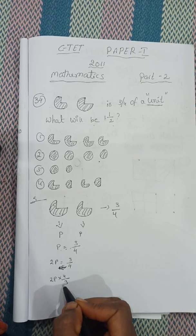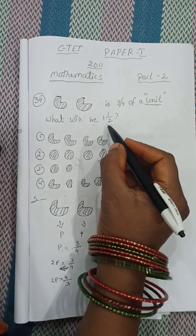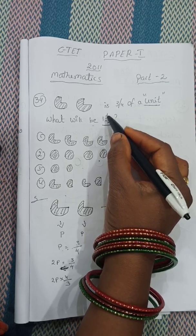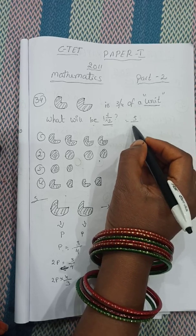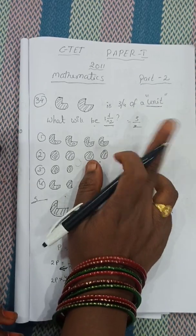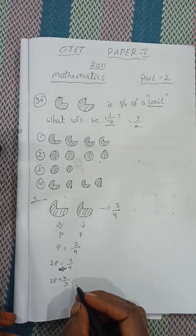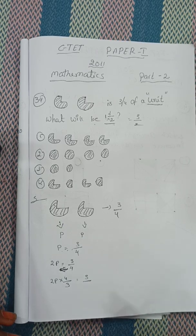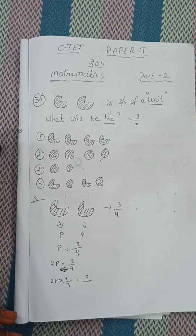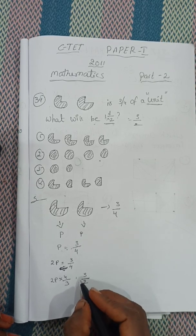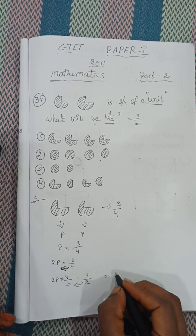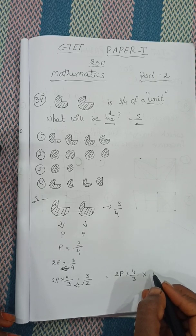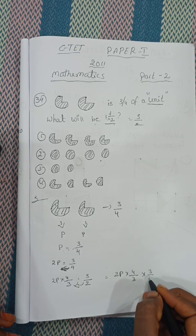2P is equal to 4 by 3. This one first converted: 2 into 1 plus 1, how much? 3 by 2. So 2P is equal to 3 by 2. Again, this one comes in this place: 2P into 4 by 3 into 3 by 2.